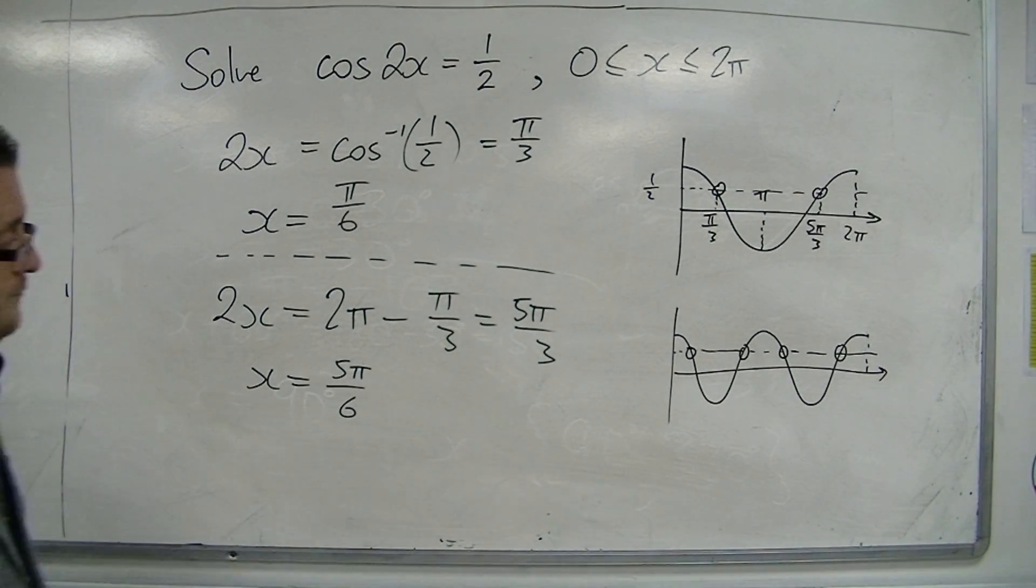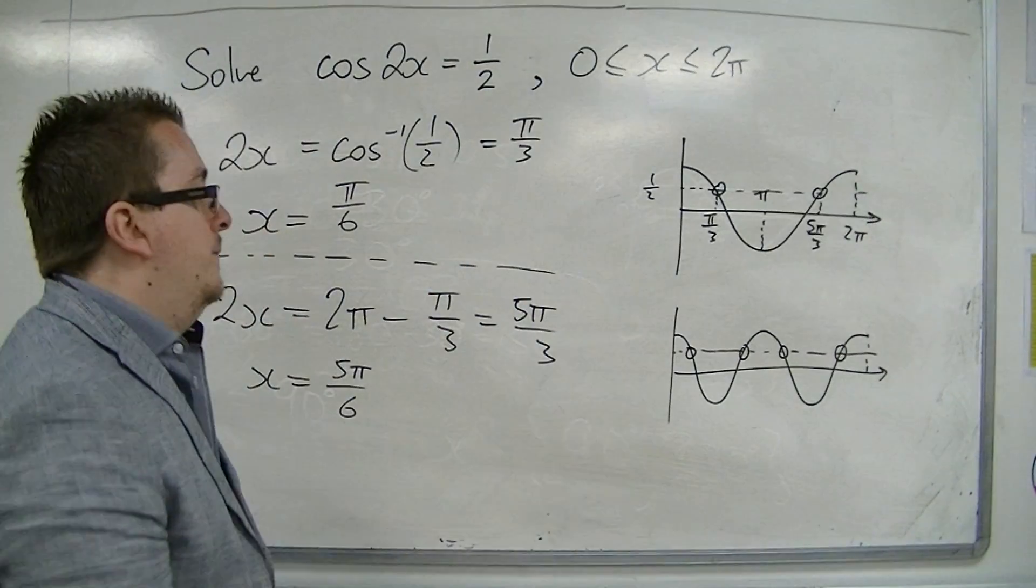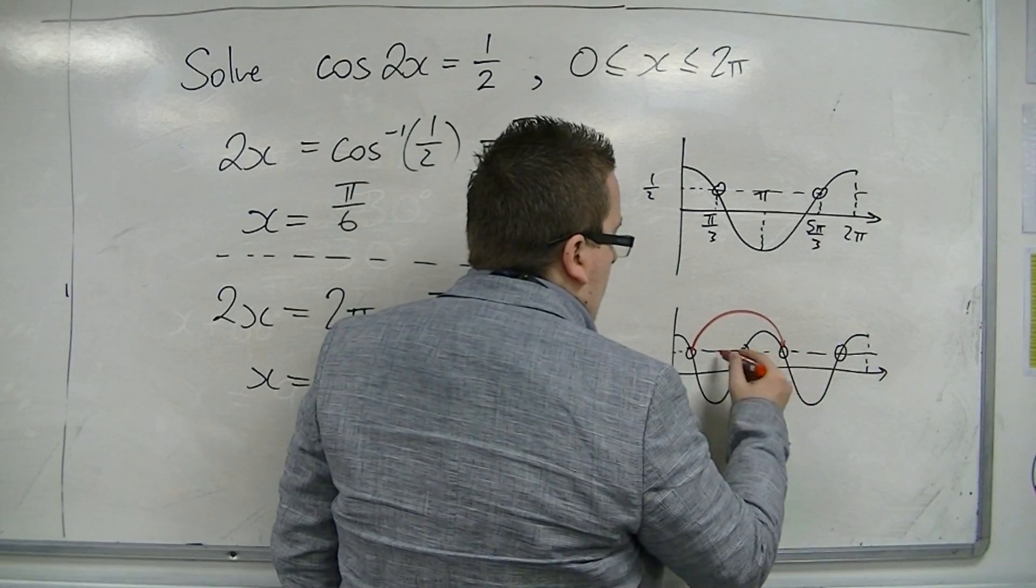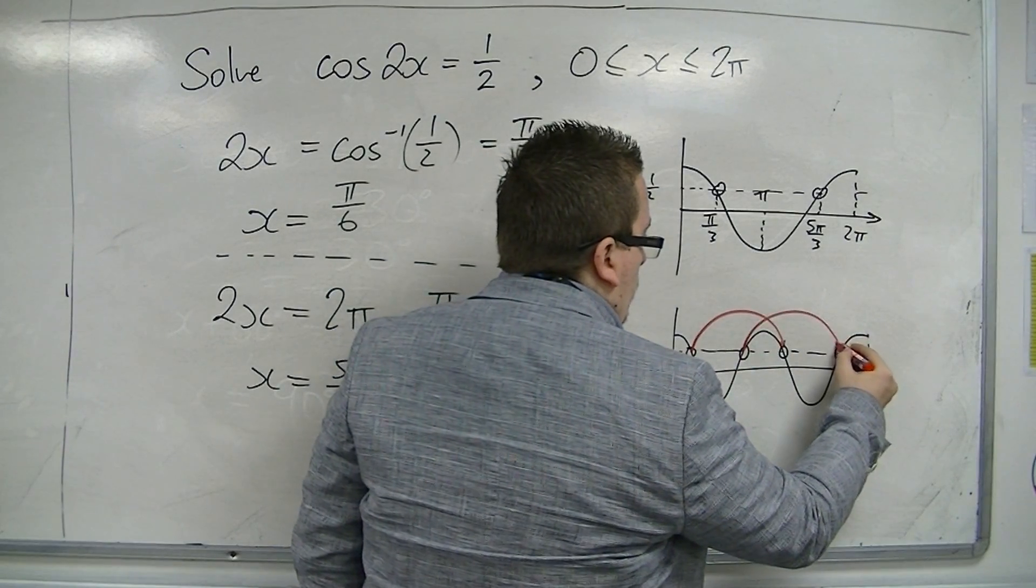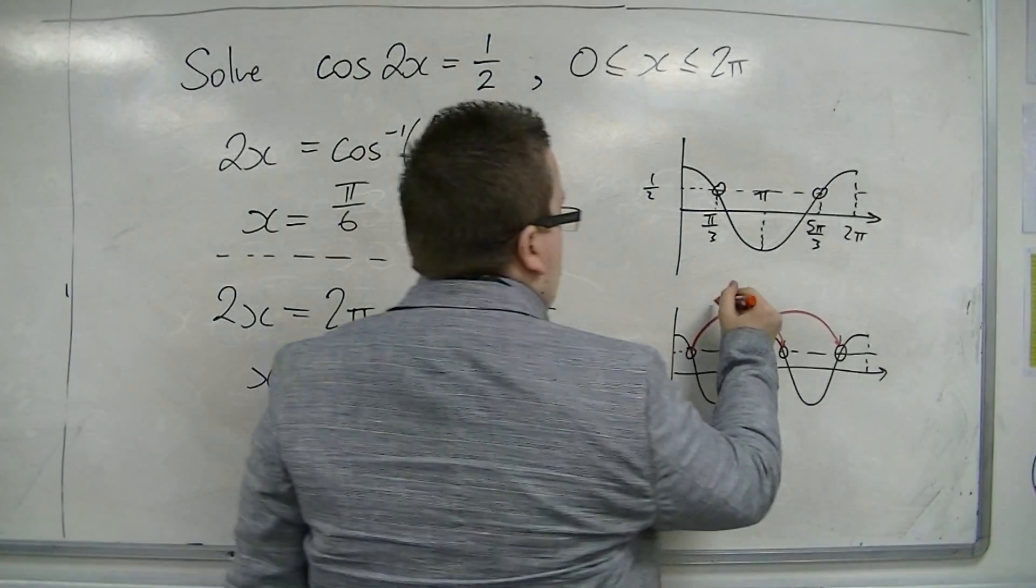We've got 2 of them. So in order to get the final 2, I need to recognise that I can just add an amount to both of these 2 in order to get the other 2.